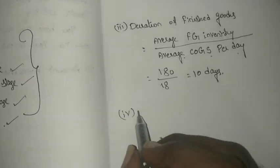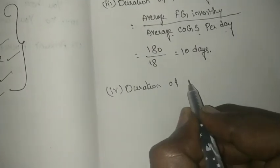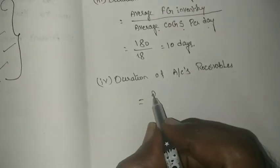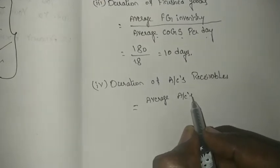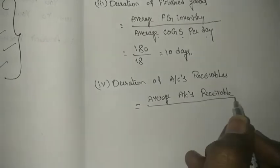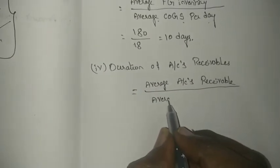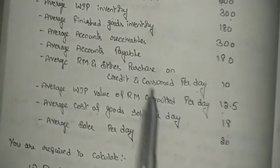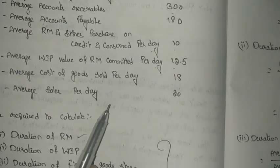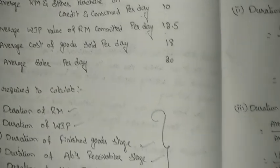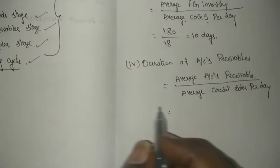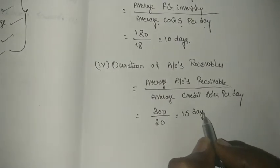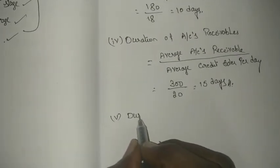The fourth calculation is the duration of accounts receivable. The formula is: average accounts receivables divided by average credit sales per day. In the problem, average accounts receivables is 300. Credit sales are not separately given, so the sales figure provided is treated as credit sales, which is 20 per day. So 300 divided by 20 gives 15 days as the duration of accounts receivables.